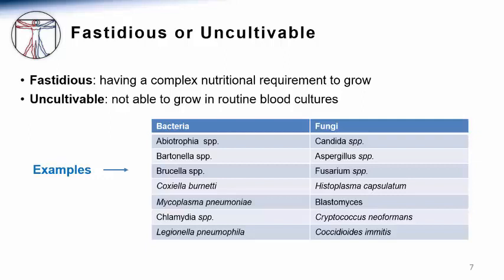Fungal organisms are classically difficult to grow in routine blood cultures. Candida infection is often seen in patients who have been on prolonged antibacterial therapy or who have intravascular catheters or devices. Aspergillus infective endocarditis is uncommon but typically occurs in the setting of cardiac surgery. Aspergillus invades the blood vessel wall and, importantly, does not appear in the bloodstream; therefore, it is impossible to grow in blood cultures. Endemic fungi such as Histoplasma, Blastomyces, and Coccidioides can also cause infective endocarditis in rare cases.